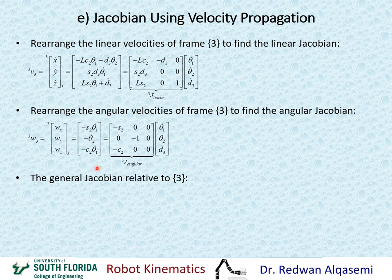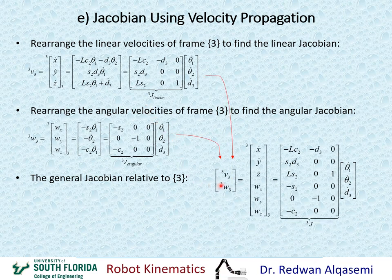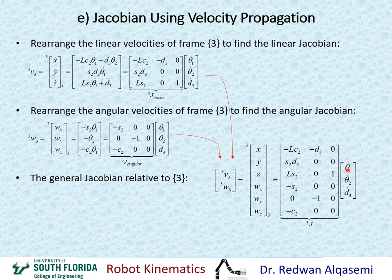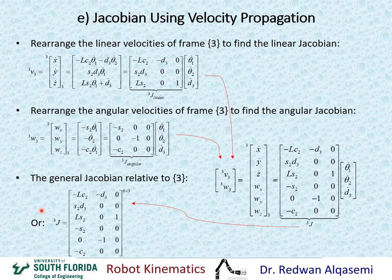To find the general Jacobian relative to frame 3, I combine the linear and angular Jacobians. The 6x1 vector includes x dot, y dot, z dot from the linear velocity vector and omega x, omega y, omega z from the angular velocity vector. The first 3x3 elements of J3 are from the linear Jacobian and the lower 3x3 elements are from the angular Jacobian. The joint velocity vector is theta 1 dot, theta 2 dot, and D3 dot, giving a 6x3 Jacobian J3 in reference to frame 3.